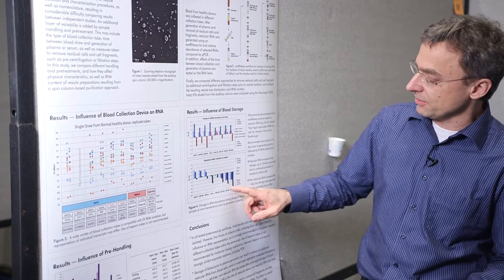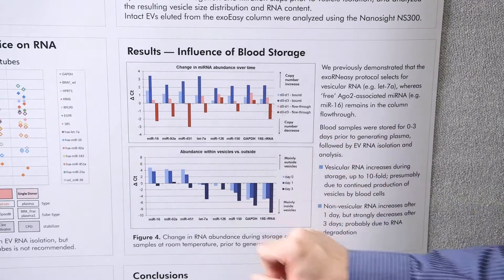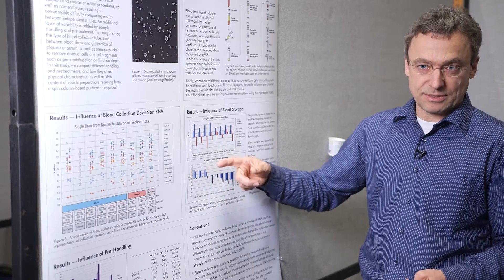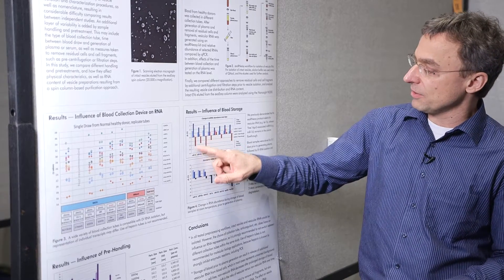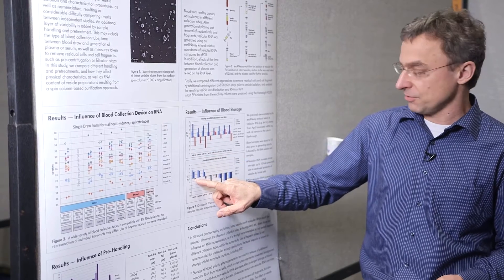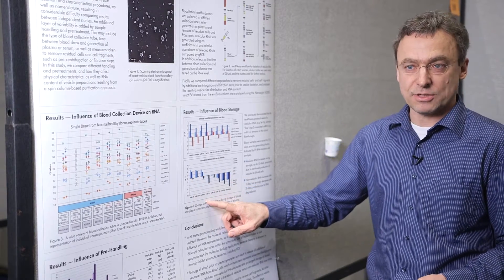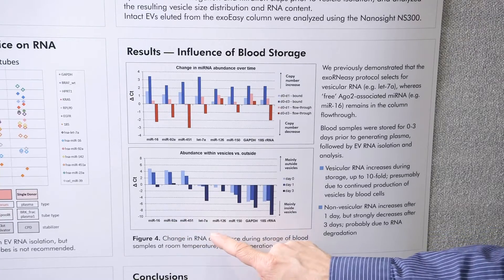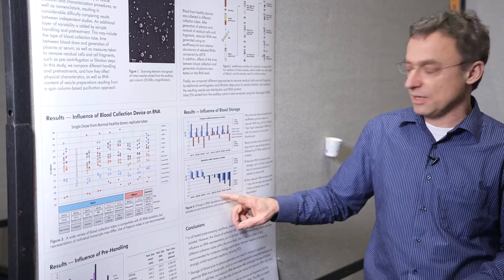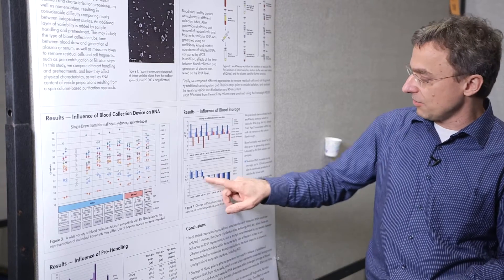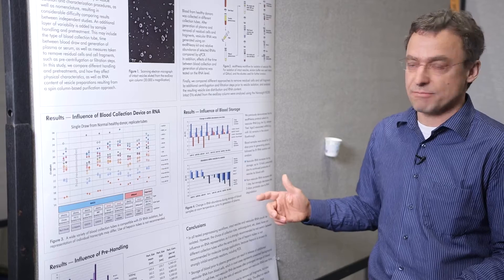You can see this in the second diagram. MIR16 is strongly outside vesicles — only a small portion is inside. It stays about the same after one day but then the non-vesicular portion is degraded, so after three days the majority is actually outside vesicles. Similarly, MIR92A and MIR451 — a marker of erythrocytes — are initially outside vesicles. In contrast, LET7A, MIR126, and MIR150 are preferentially inside vesicles and this preference increases over time. GAPDH and 18S are exclusively inside vesicles and stay that way.